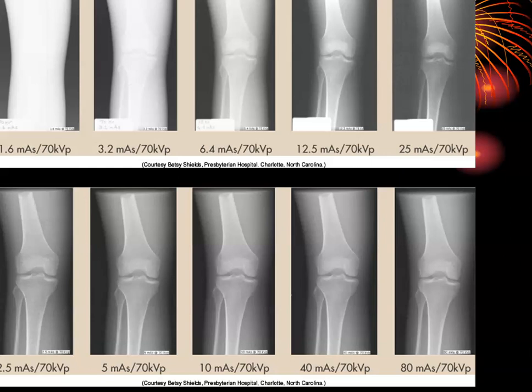Looking at a comparison image: the top row uses film screen at 70 kVp, ranging from 1.6 to 25 mAs — showing progression from high contrast/white to a slightly overexposed darker image, with about 12 mAs appearing optimal. The bottom row shows a DR system from 2.5 to 80 mAs with no significant change in density or contrast — the images all look good. Shooting at 40 mAs is totally irresponsible; please don't do that.